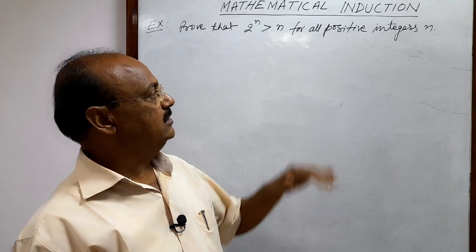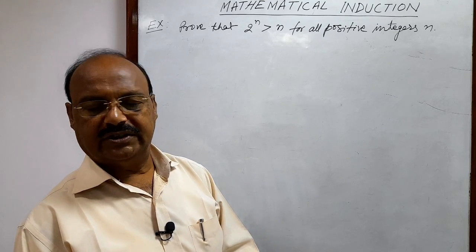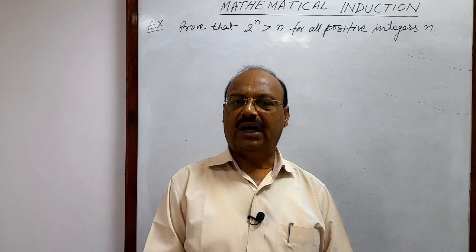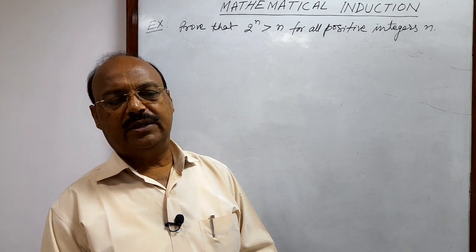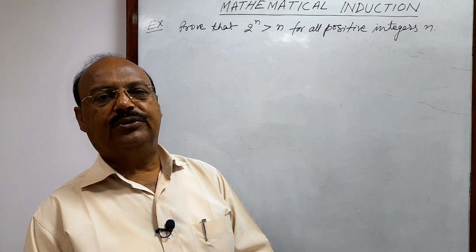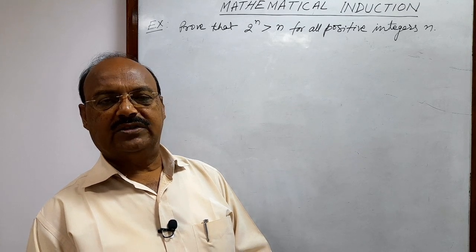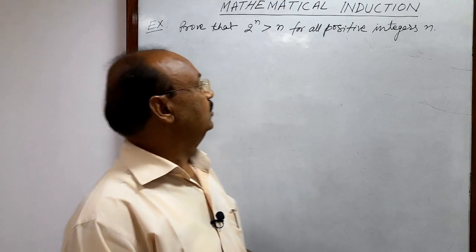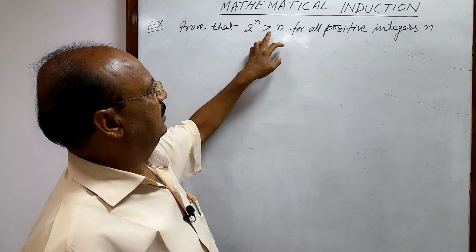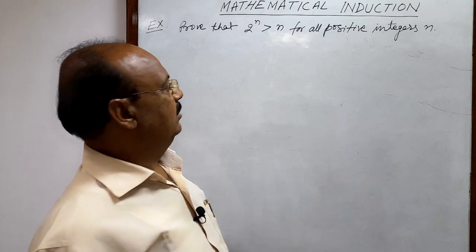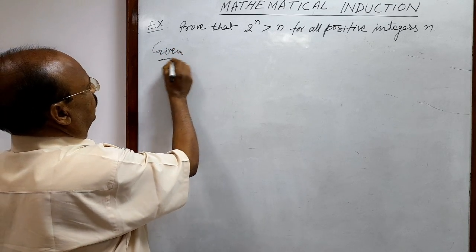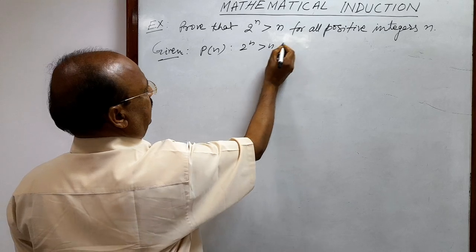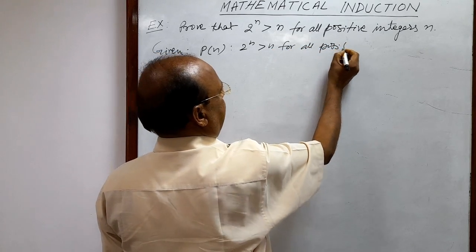In the first step, we have to show that this statement is true for n equal to 1. In the second step, we assume that this statement is true for n equal to r, meaning P(r) is true. In the third and final step, we show that this statement is true for n equal to r plus 1, meaning P(r+1) is true. By that we conclude the statement is true for all n. The mathematical statement P(n) is: 2 to the power n is greater than n for all positive integers.